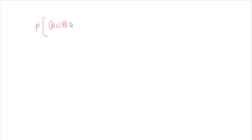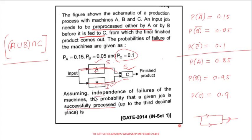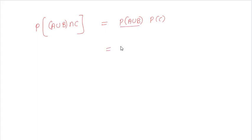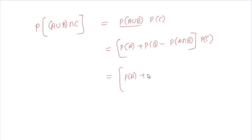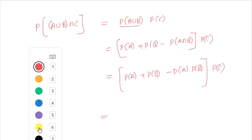So the probability expression is P((A ∪ B) ∩ C). Since all three machines are independent, this equals P(A ∪ B) multiplied by P(C). Now P(A ∪ B) expands as P(A) + P(B) − P(A) · P(B), because they are independent. Then multiply by P(C).